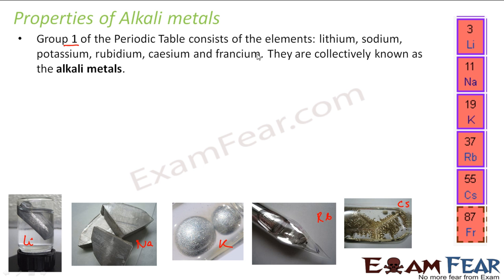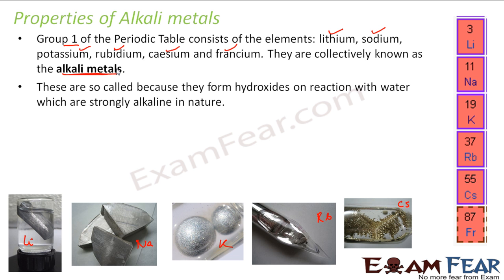So, group 1 of the periodic table consists of lithium, sodium, potassium, rubidium, cesium, and francium — and these are called alkali metals. Please note, only these six elements are called alkali metals. But they are very important. As I have told, we use these metals a lot in our day-to-day life, so it is good to understand them. We will study in depth about these metals in this chapter.